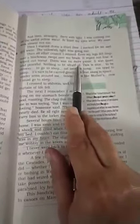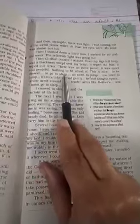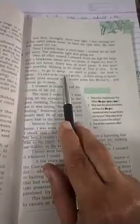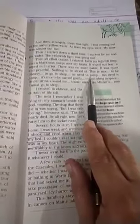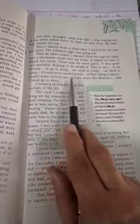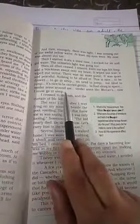It was quiet and peaceful, nothing to be afraid of. This is nice to be drowsy, to go to sleep. No need to jump, too tired to jump. It's nice to be carried gently, to float along in space. Tender arms around me, tender arms like mother's.